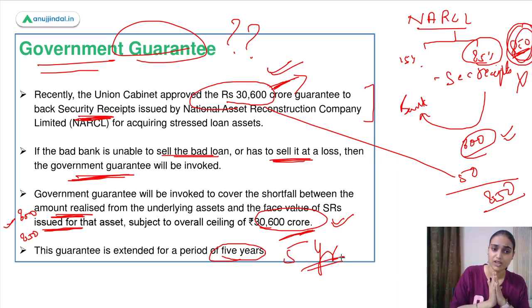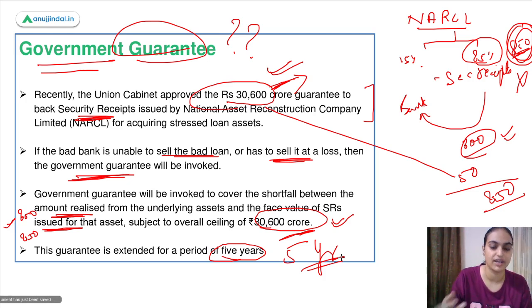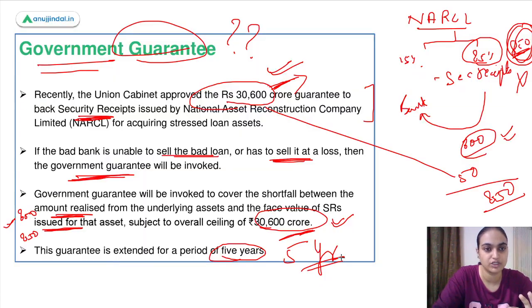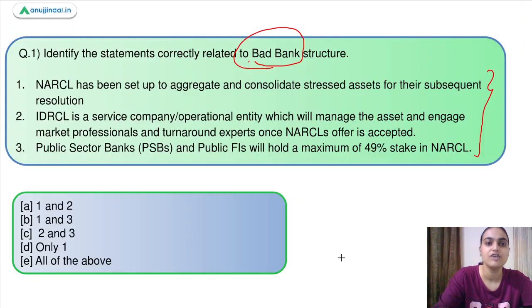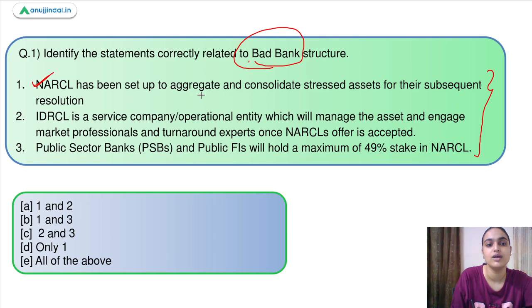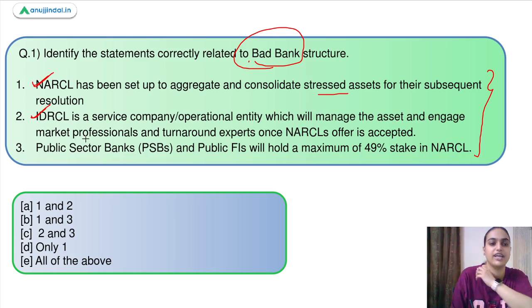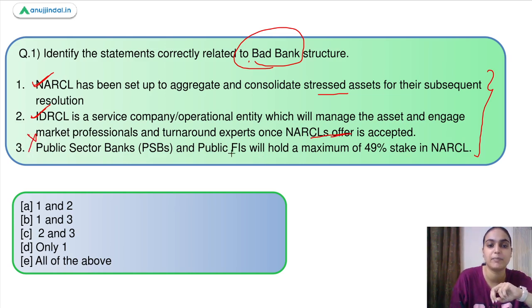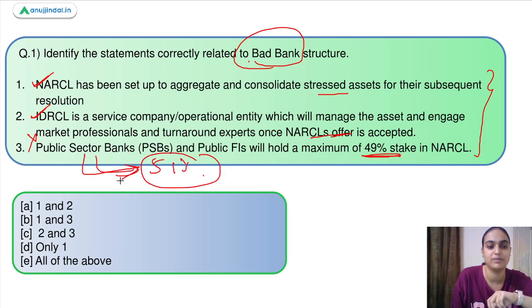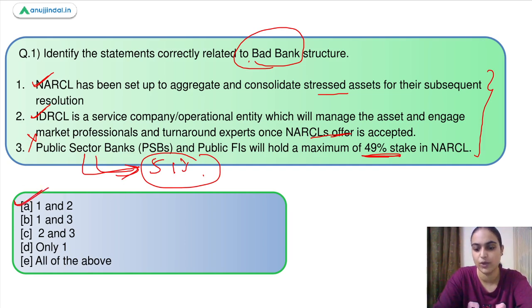This government support is why we prefer the bad bank structure — without it, no bank would prefer to accept security receipts. Coming back to the question: statement 1 is correct — NARCL is set up to aggregate stressed assets. Statement 2 is correct — IDRCL will manage assets, engage professionals and turnaround experts once NARCL's offer is accepted. Statement 3 is incorrect — it says public sector banks will hold 49% stake in NARCL, but actually public sector banks hold 51% stake. So the answer is option A, statements 1 and 2.